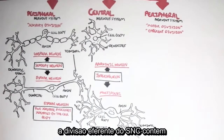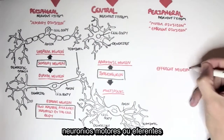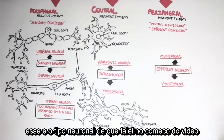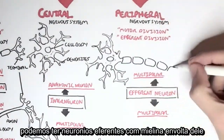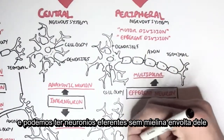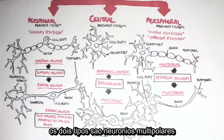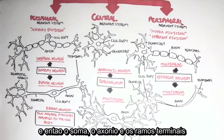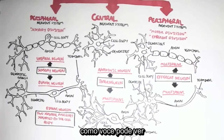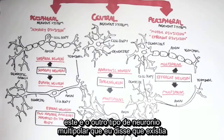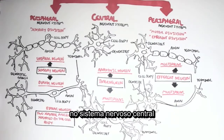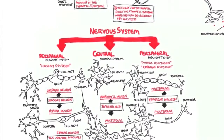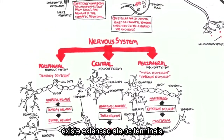The efferent division of the peripheral nervous system contains efferent neurons — motor neurons — which are all multipolar in structure. This is the type of neuron drawn in the beginning of this video. We can have efferent neurons with myelin wrapping around them, or efferent neurons without myelin. Either way, both are multipolar in structure, consisting of dendritic branches, the cell body, and then the axon and terminal branches. The terminal branch in the efferent division is extended with the axon, which distinguishes it from the multipolar interneurons seen in the central nervous system.